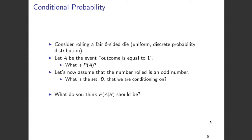Now let us consider an example. Consider a fair six-sided die, so the probability of obtaining each and every number is 1/6. Let A be the event that the outcome when we roll this die is 1. The probability of A is 1/6 since all faces are equally likely and there are 6 outcomes. Now let us assume that the number rolled is an odd number. So what is the set B? Set B is basically the set of odd numbers you can get when you roll the die.